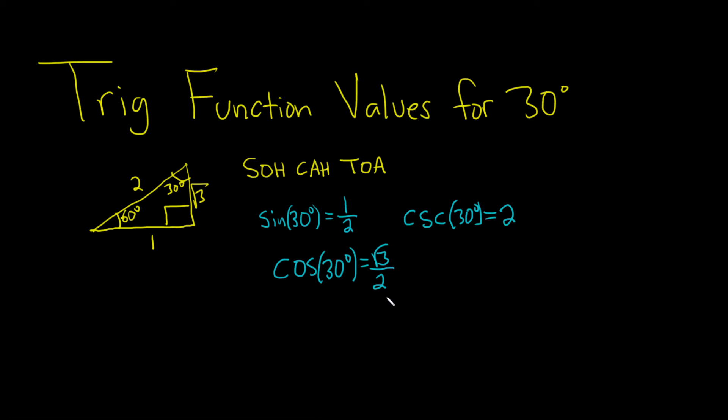And now we can find the reciprocal of cosine, which is secant. So you just flip it. Secant of 30 degrees would be 2 over the square root of 3.